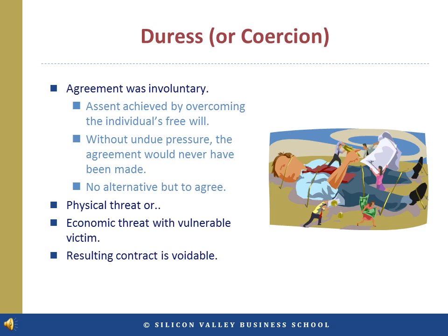A contract signed as the result of holding a gun to the other party's head will be unenforceable in court. The courts will void a contract formed under these conditions, as the agreement was somewhat less than voluntary. Similar to the situation for the unconscionability defense, the courts will increasingly consider threats of economic hardship as grounds to void the contract, especially where the victim is vulnerable.